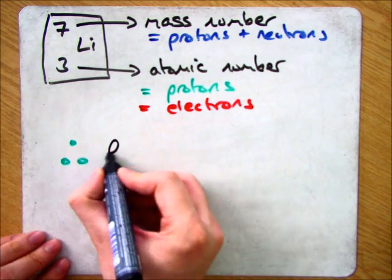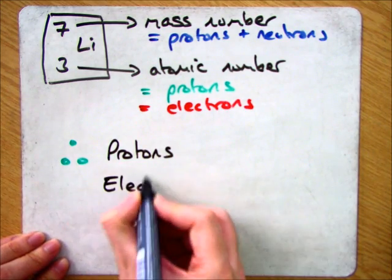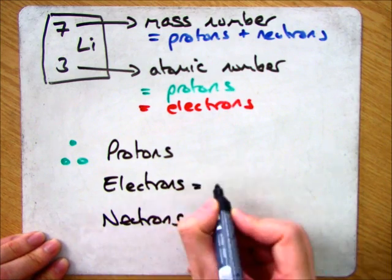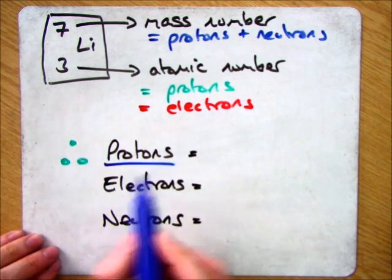Using that information, you're able to work out the number of protons and neutrons and electrons for any atom. And in the exam, they might just turn around to you, give you a random element and say work them out.